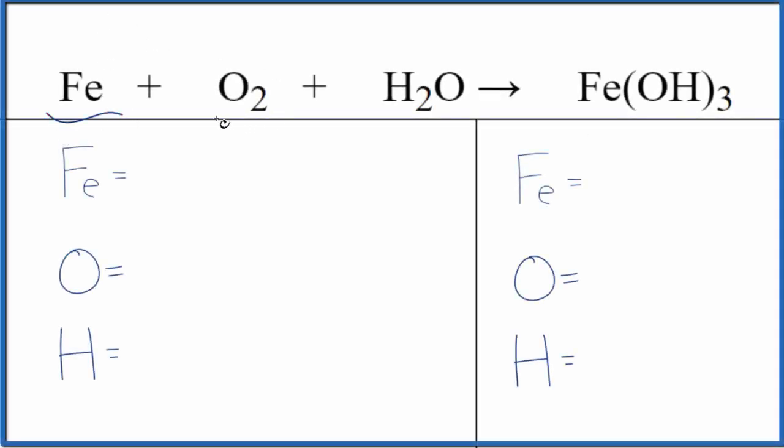Let's balance the equation Fe plus O2 plus H2O. That gives us Fe(OH)3. This is iron three hydroxide. This is involved in rusting, so it's kind of an important equation. We'll also look at the type of reaction and write the states.